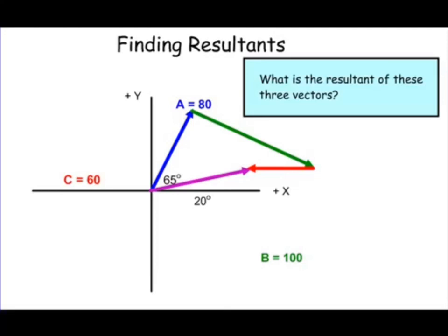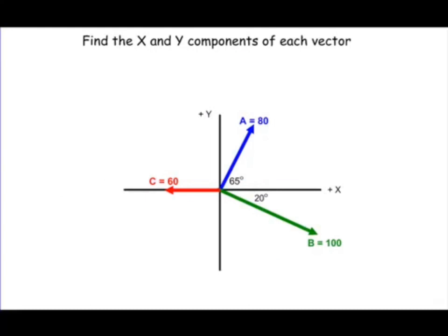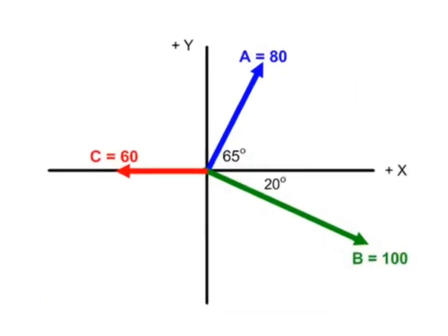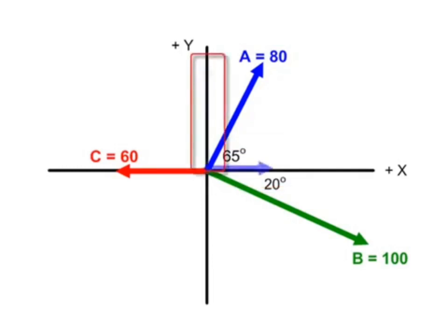If we were to solve this graphically, you would see the resultant is the purple vector as shown. To find the resultant algebraically, we need to first find the x and y components of each vector. The x component of vector a is here, and the y component of vector a is here. Likewise, the x component of vector b is located here.